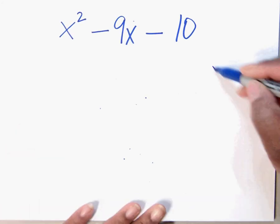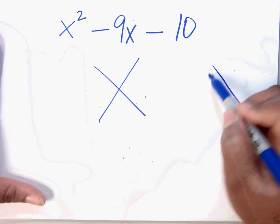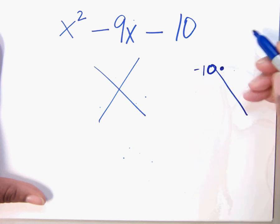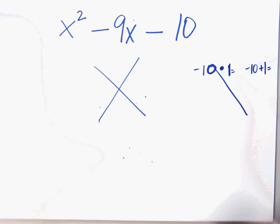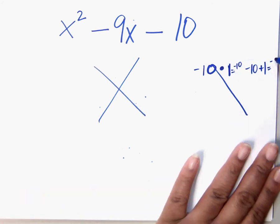So what did you get first period? I'm going to write my x over here. What did you get first period? Negative 10 at the top. Okay, so you're saying that negative 10 times 1. And then you're saying negative 10 plus 1. Okay. So negative 10 times 1 is negative 10. And then negative 10 plus 1 is negative 9.